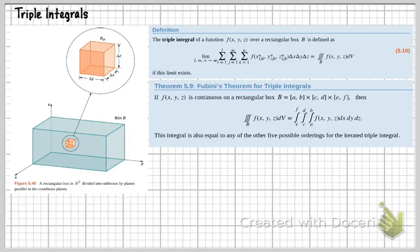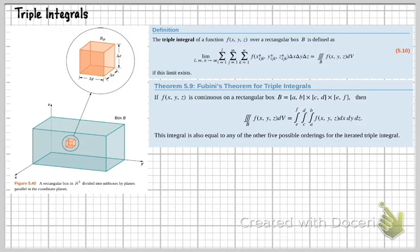Triple integrals. Let's take a look at this definition here. A triple integral of a function f(x, y, z) over a rectangular box is defined as the limit of l, m, n going to infinity of the sums of Δx, Δy, Δz, which equals the triple integral of f(x, y, z) dV over the region B, where B is three-dimensional.